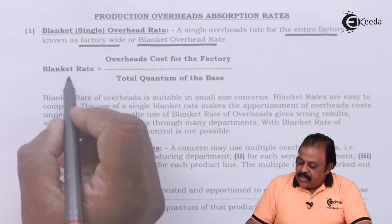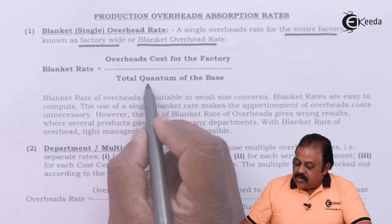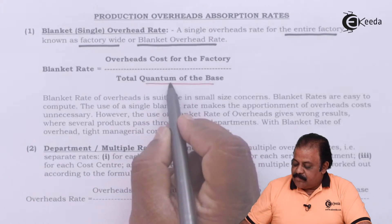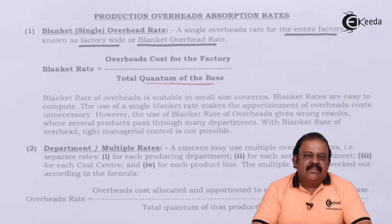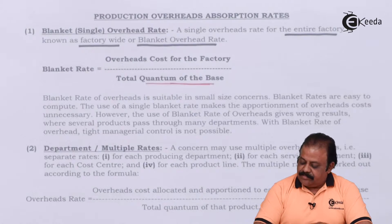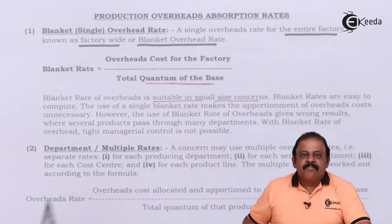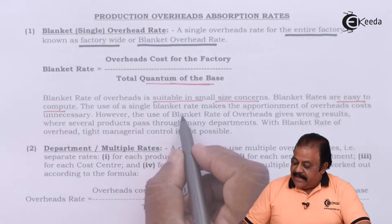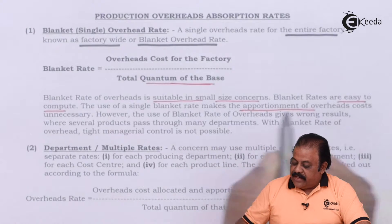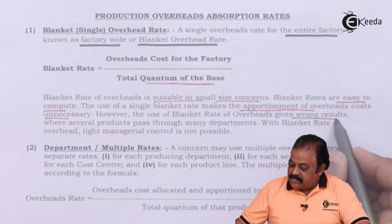How is it calculated? Blanket rate equals overhead cost for the factory divided by total quantum of base. Such base can be direct labor hours, based on which overheads may be distributed or apportioned to different departments. Blanket rate of overhead is suitable in small-size concerns and is easy to compute. The use of a single blanket rate makes the apportionment of overhead costs unnecessary.